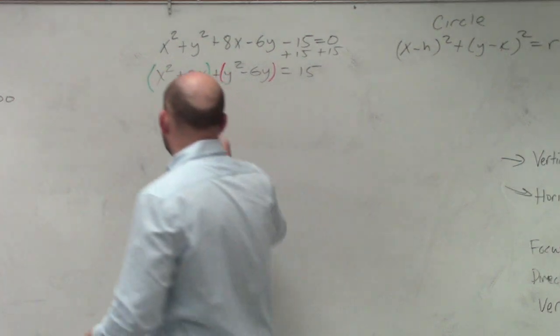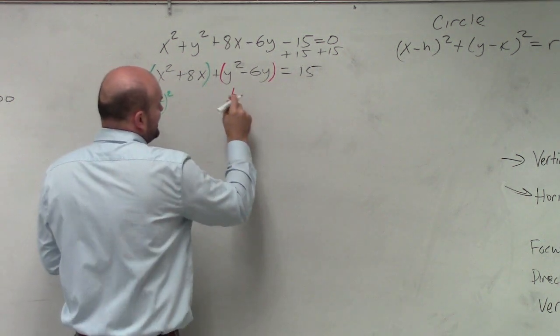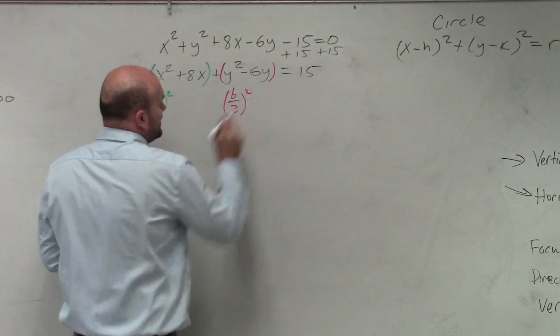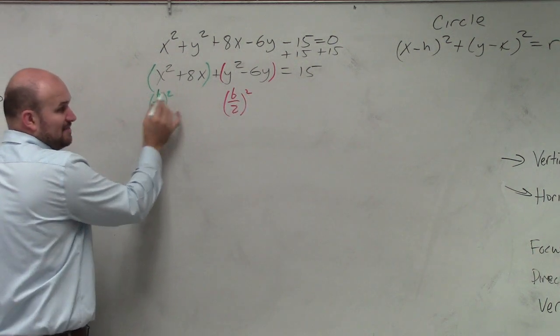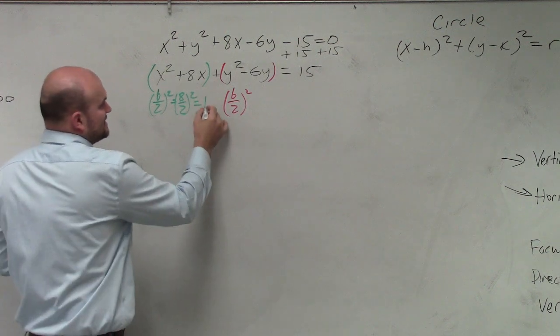In each case, I take my b, divide it by 2, and square it. So my b in this case is 8, divided by 2, squared, which we know is 16.